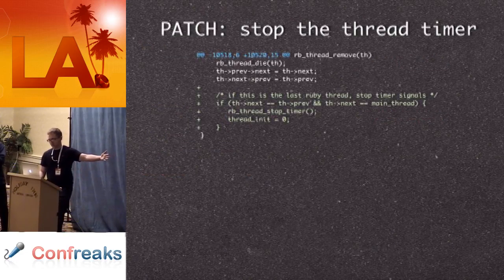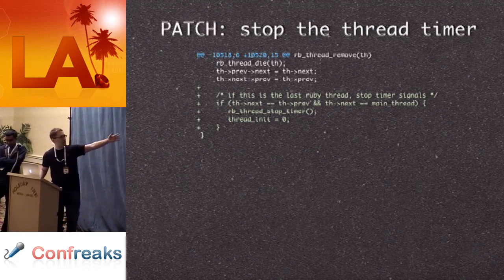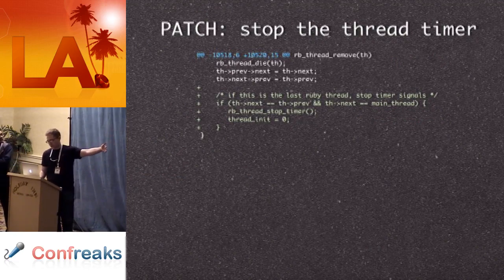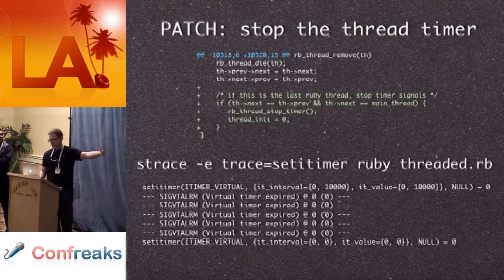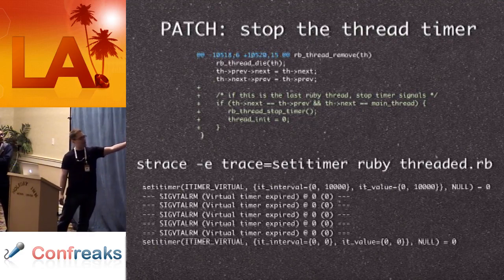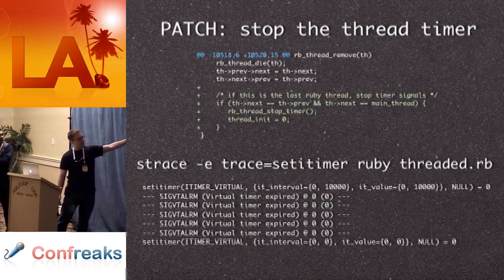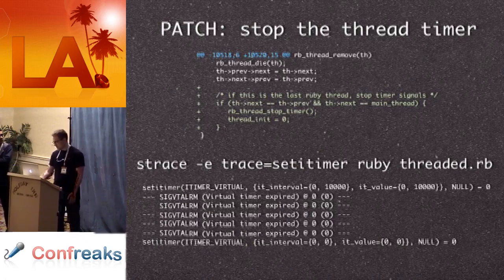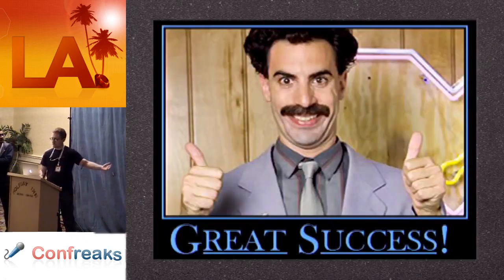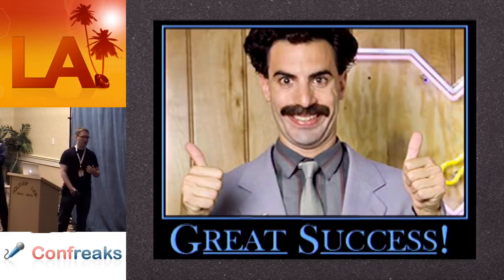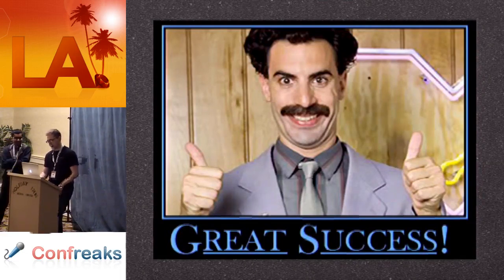We wrote a patch to the Ruby VM called stop_thread_timer. It's pretty simple. This check basically says: if I'm the last thread, turn off the thread timer, stop interrupting my Ruby process — I want to be able to run code. You attach strace, you can see the timer starts, some threads were spawned, alarms came in, and the timer was turned off. This is actually a pretty big win — our code started running faster.